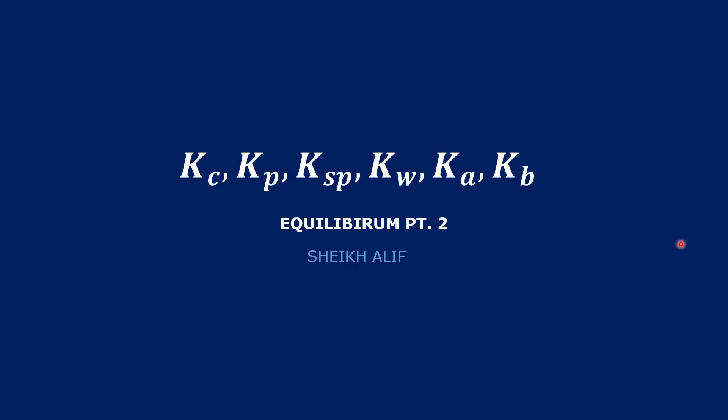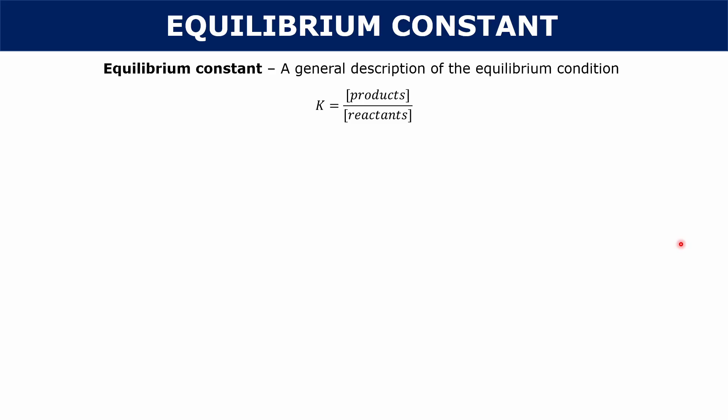Hey, what's up everyone? Today we're going to be going over a couple different types of equilibrium constants including Kc, Kp, Ksp, Kw, Ka, and Kb. The first thing to remember is that all of these are equilibrium constants. An equilibrium constant is a general description of the equilibrium condition.